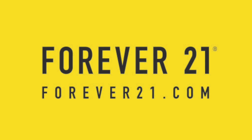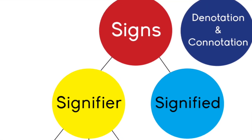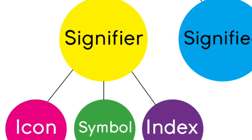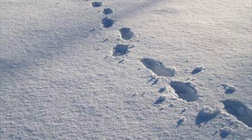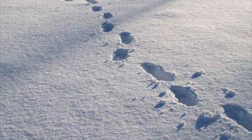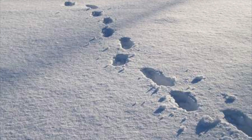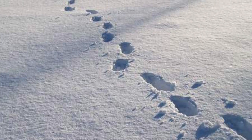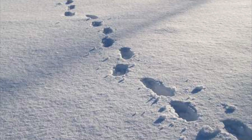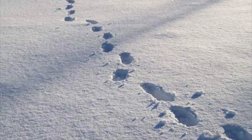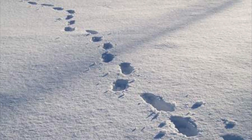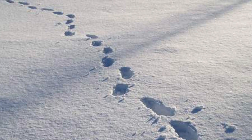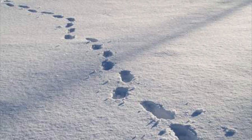Let's test your knowledge of semiotics a little more. I'll be showing you an image and you'll identify whether it's an icon, symbol, or index. Take a moment and analyze this photo. Are the footprints in the snow an icon, symbol, or index? If you said index, you're correct — the footprints cannot exist without a person stepping through the snow. What is the signified? If you said someone walking in snow, you're correct. The signifier? If you said the footprints, you're absolutely right.